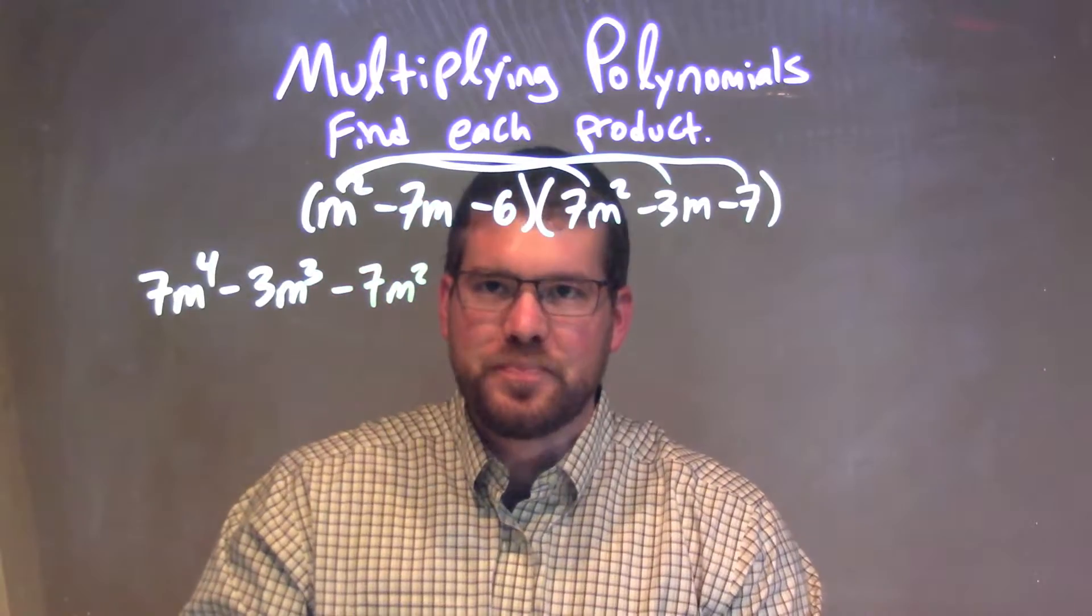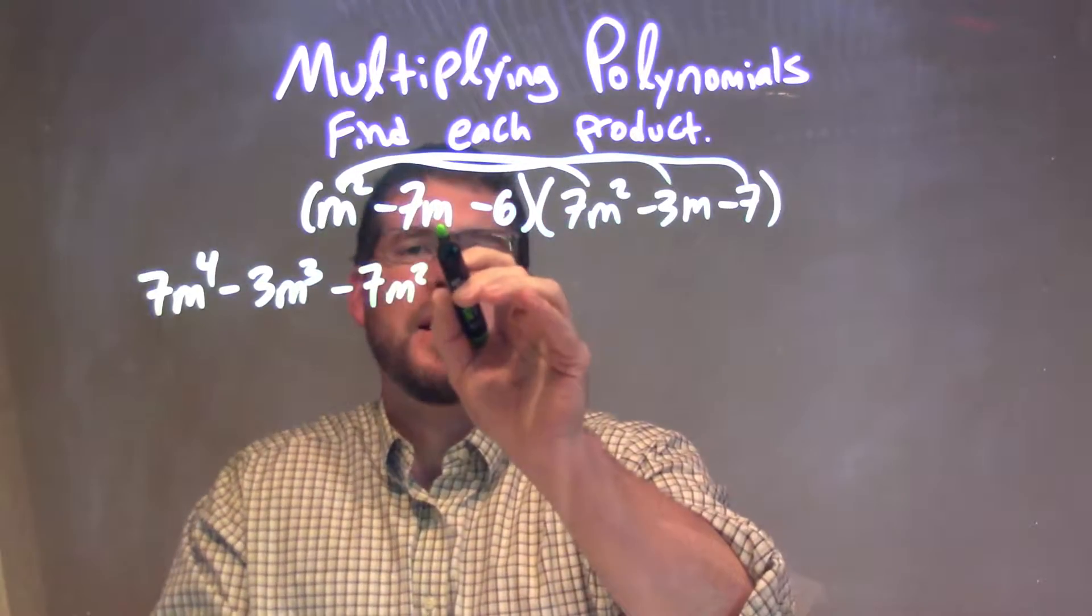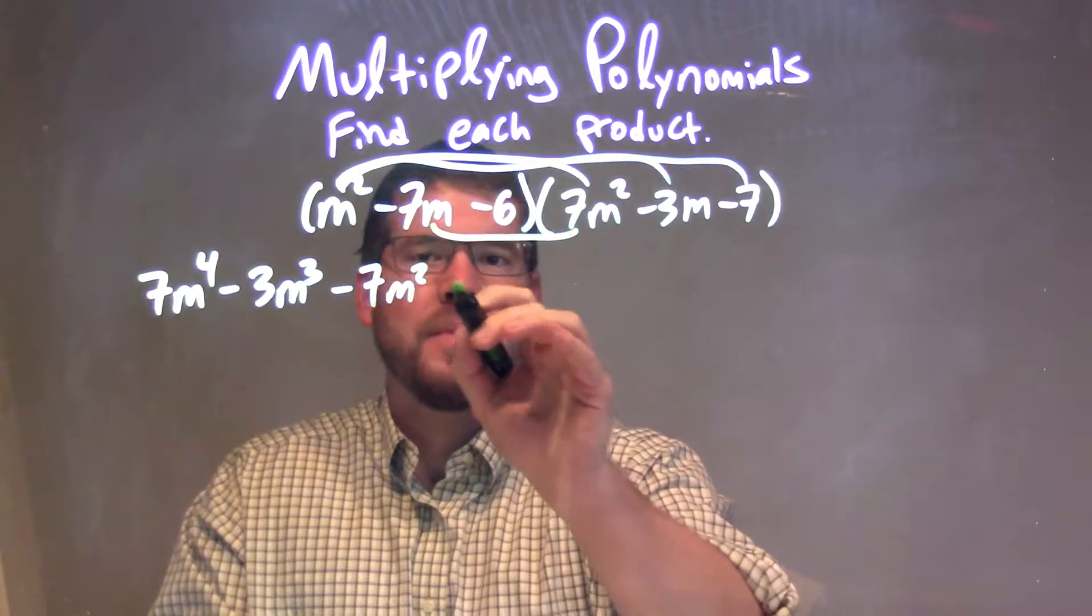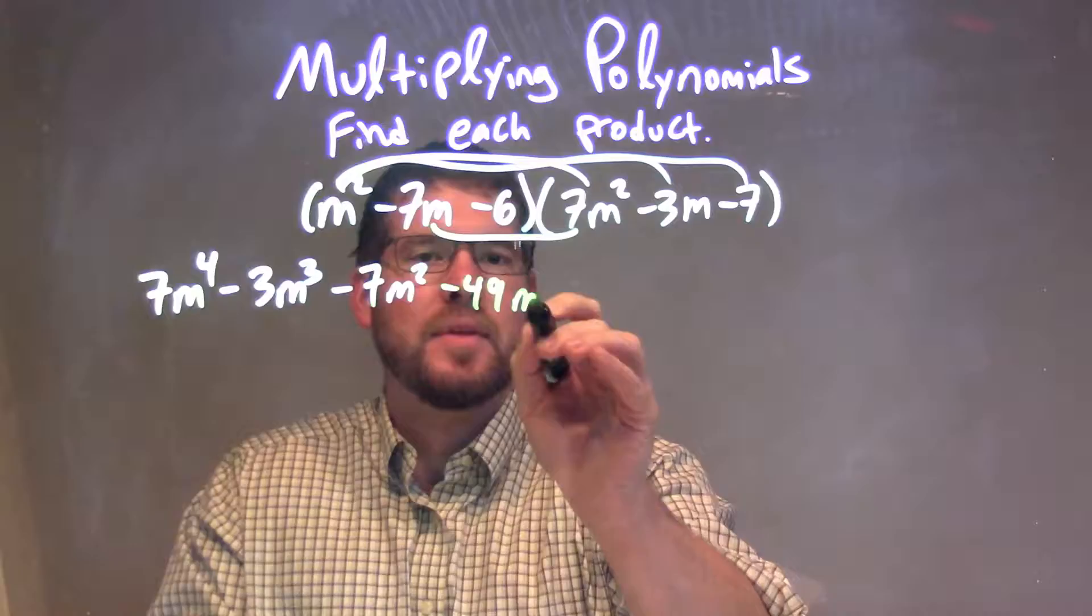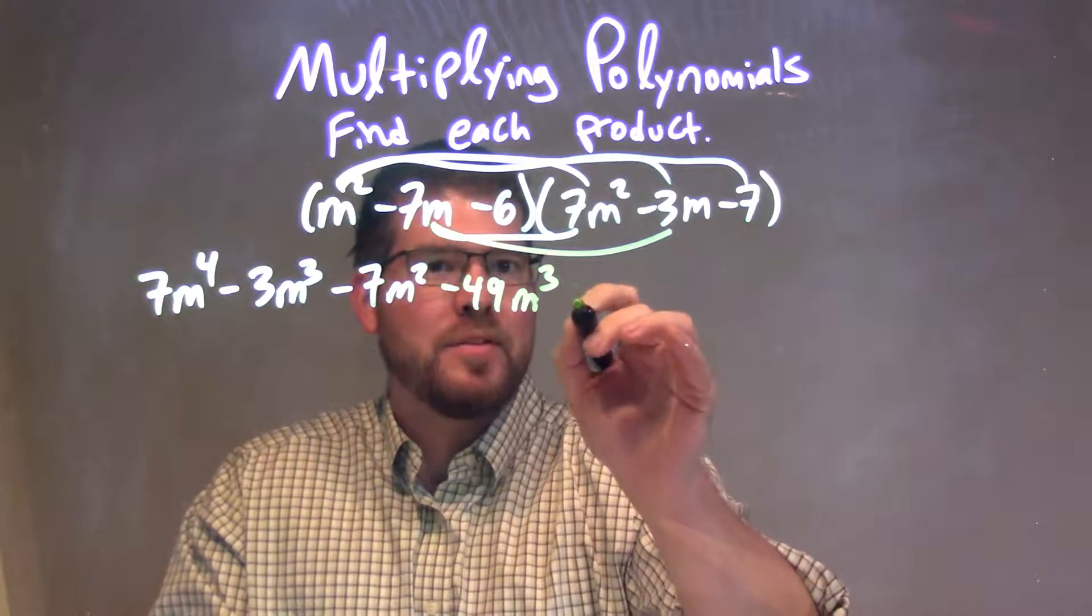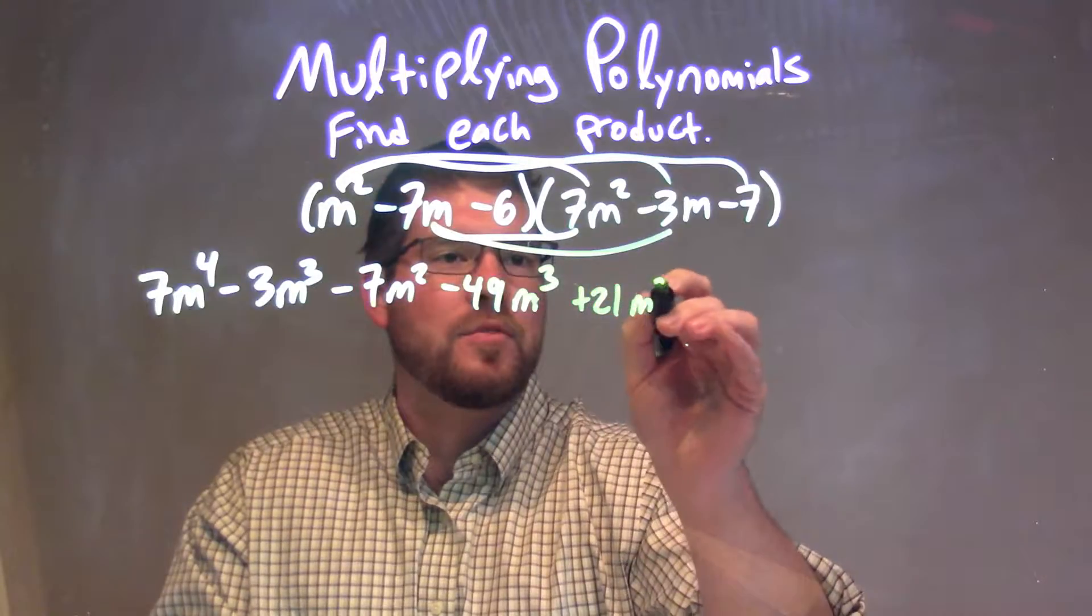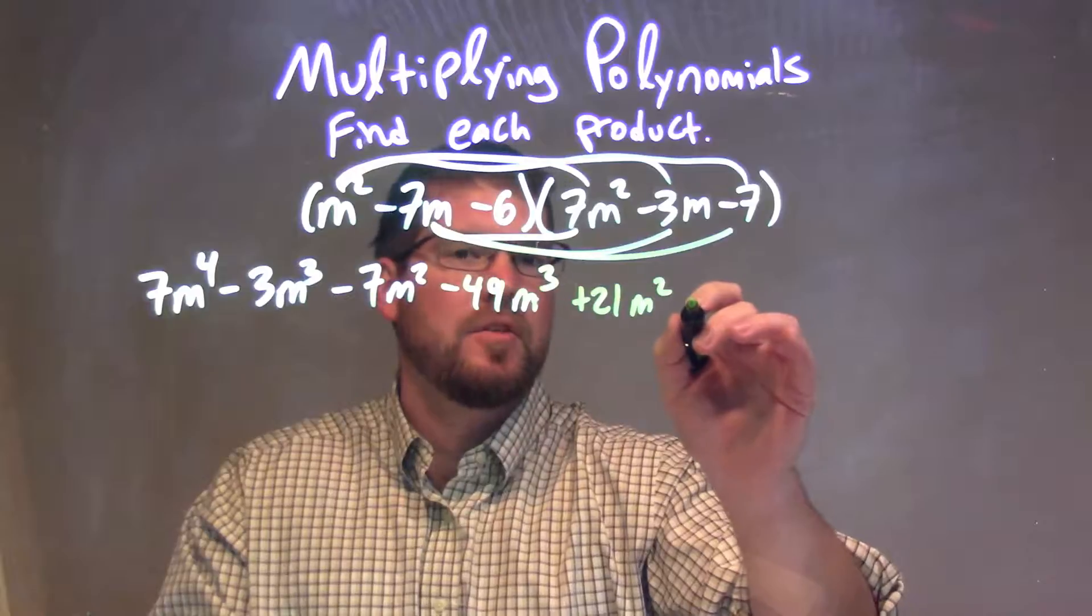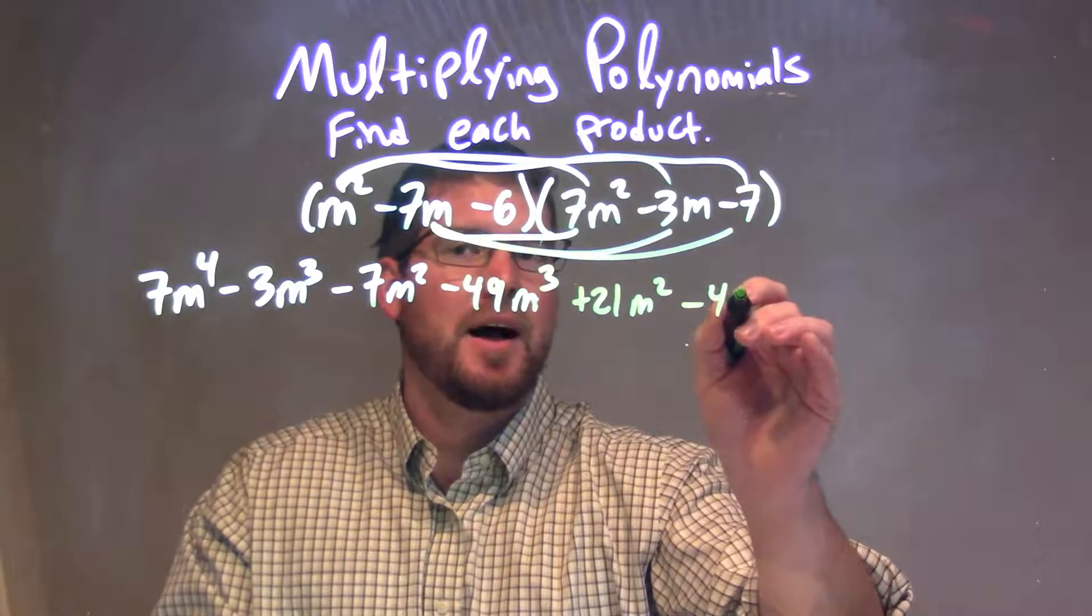Pretty straightforward so far. So now let's deal with the minus 7m. Minus 7m times 7m is minus 49m to the third power. Minus 7m times minus 3m is a positive 21m squared. And minus 7m times minus 7 is minus 49m.